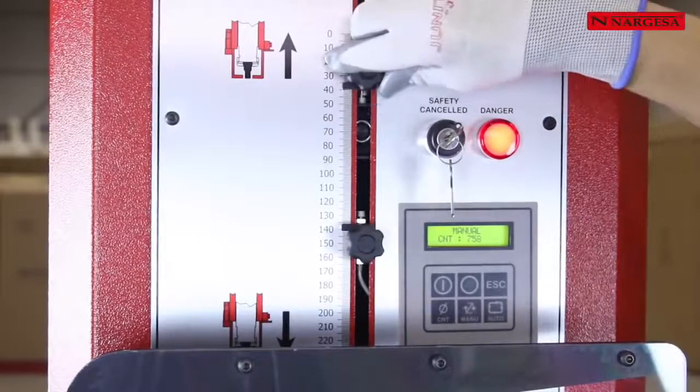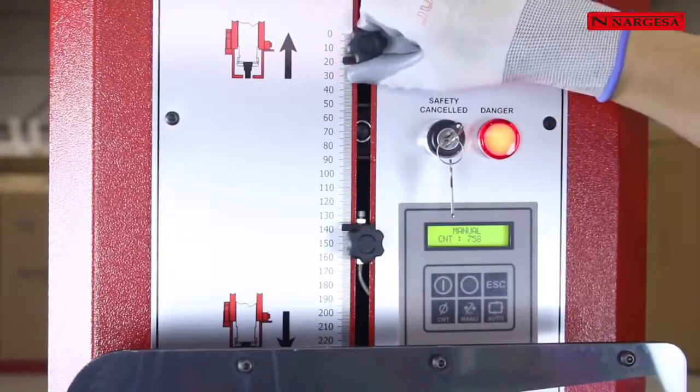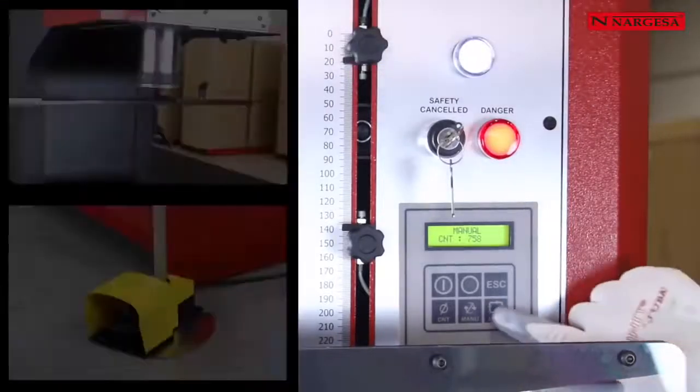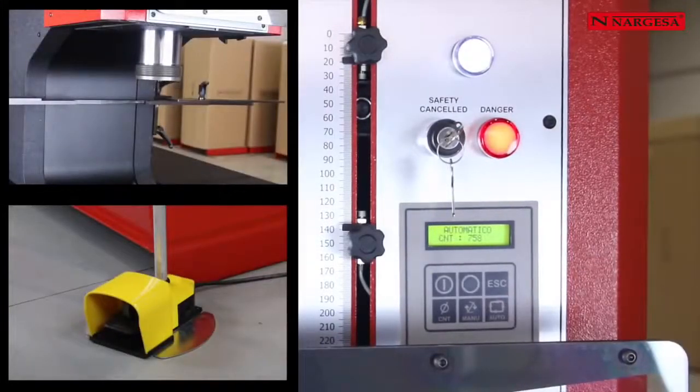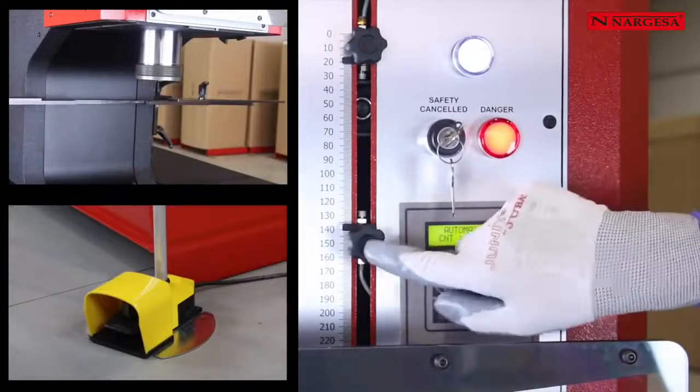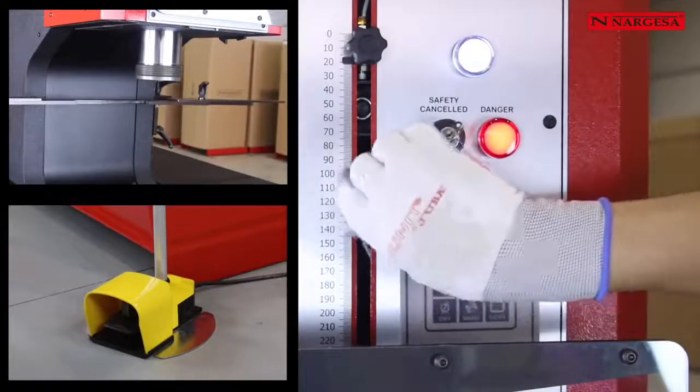We set the upper limit switch to the desired size. We operate the machine in automatic mode. The piston moves to the upper limit. Then we set the lower limit switch and proceed to perform the operation.